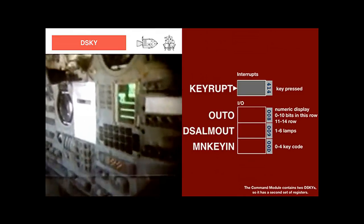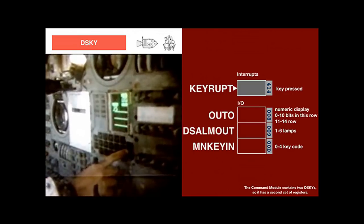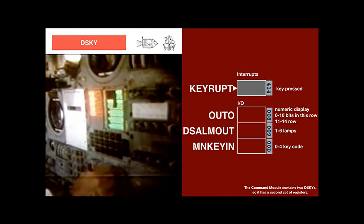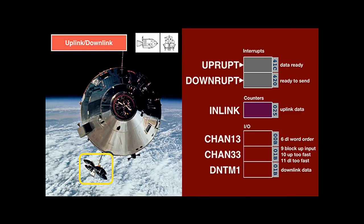The user interface is provided by the so-called DSKY, which stands for display and keyboard. It has 19 keys, 15 lamps, and several numeric output lines. Keys generate the key-rupt interrupt, and the key number can be read from the key-in I/O channel. The numeric display is driven by the out-0 channel. There is also bidirectional digital radio communication on S-band between mission control and each spacecraft at a selectable speed of 1.9 or 51 kilobits per second. Data words from mission control show up in the inlink counter and trigger interrupt uprupt; data words to be sent are stored in I/O channel DNTM1.